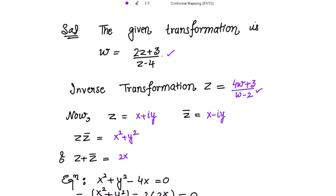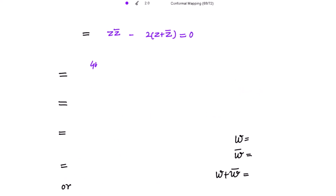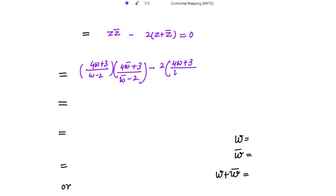Now substituting z = (4w + 3)/(w - 2) and its conjugate z̄ = (4w̄ + 3)/(w̄ - 2) into zz̄ - 2(z + z̄) = 0, we get [(4w+3)/(w-2)]·[(4w̄+3)/(w̄-2)] minus 2·[(4w+3)/(w-2) + (4w̄+3)/(w̄-2)] = 0.